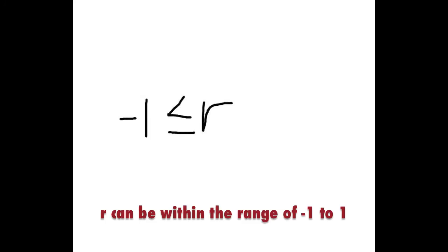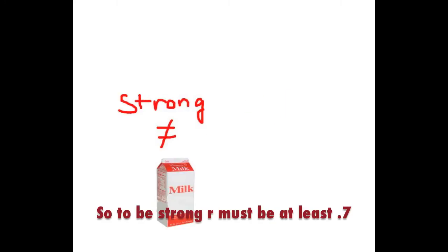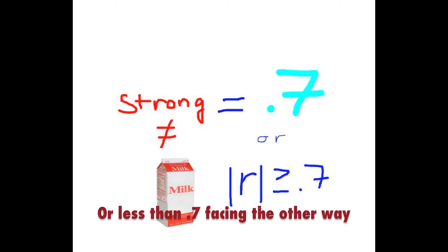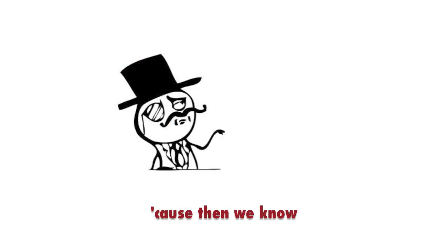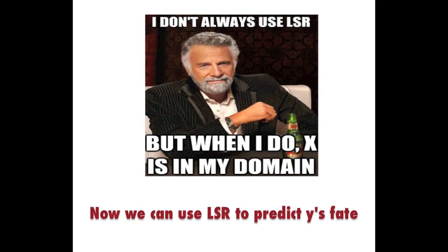R can be within the range of minus one to one. So to be strong, R must be at least 0.7 or less than minus 0.7 the other way. Because then we know half the variation we can explain.